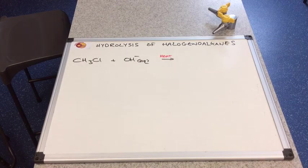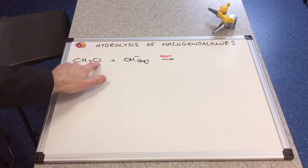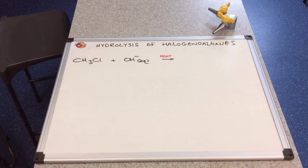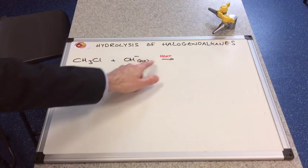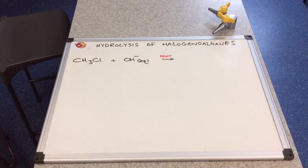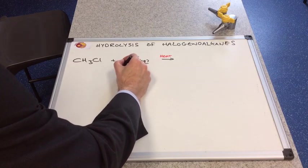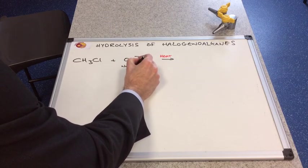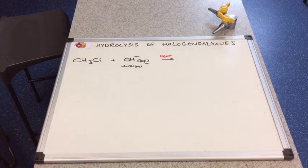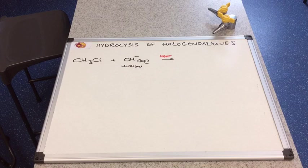We'll look at a specific example now. So I've chosen chloromethane as my example for this, and I'm reacting that with hot aqueous hydroxide ions. The most common source of that would be something like sodium hydroxide aqueous, but for the equation I'm just going to use the hydroxide ion.